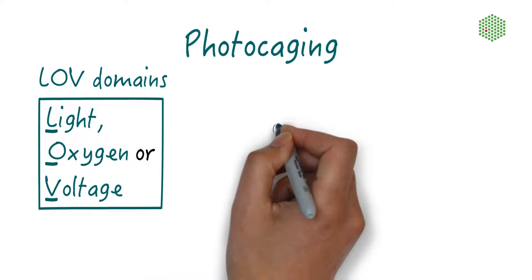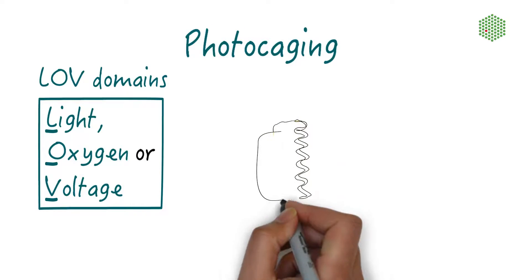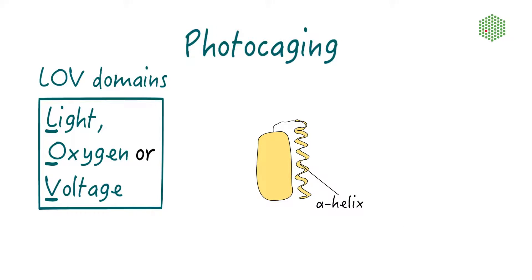The LOV core domain consists of a classical sensor domain called PAS, which is made up of a five-stranded anti-parallel beta sheet and alpha helical connector elements.